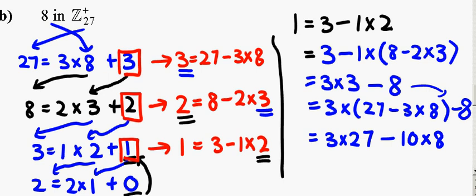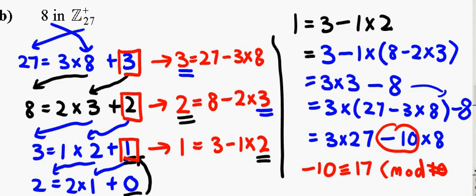And hence, I can now tell that negative 10 is the multiplicative inverse of 8 in Z27. But, since negative 10 is congruent to, let me see, 17 modulo 10, sorry, modulo 27.